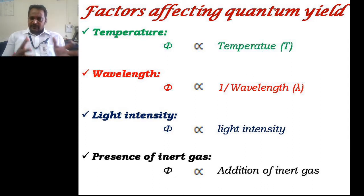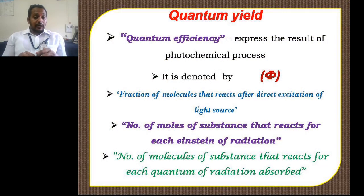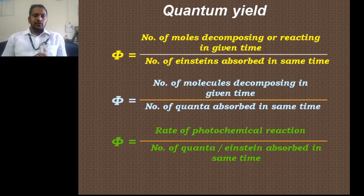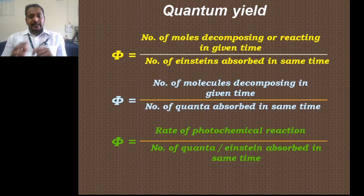High quantum yield and low quantum yield have different reasons, which we will discuss in the next video. To summarize: quantum yield or quantum efficiency is denoted by phi and expresses the result of photochemical reactions. It is the number of moles of a substance that reacts due to absorption of each Einstein of radiation, or the number of molecules that react due to absorption of each quantum of radiation. Phi equals the number of moles reacting in a given time divided by the number of Einsteins absorbed, or equals the rate of the photochemical reaction divided by the number of quanta or Einsteins absorbed.